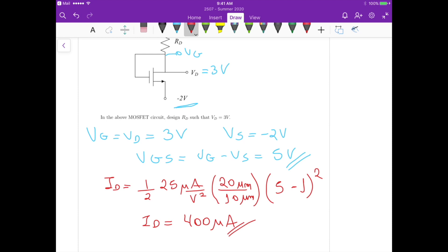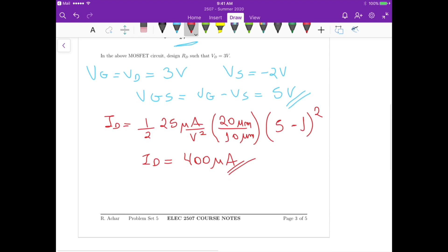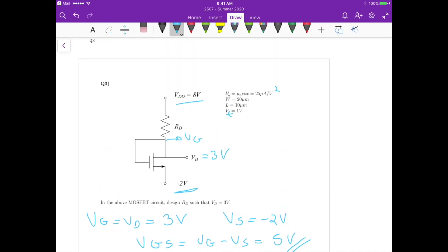Now the problem says that we want VD to be equals to 3 volts, so what should be the value of RD? So first we can equate the voltage VDD minus the voltage drop across the drain resistance to be equals to VD, because that's what we have here. So we have VD at this node, then we have a voltage drop here, and then we are left with VG or VD here, it should be 3 volts.